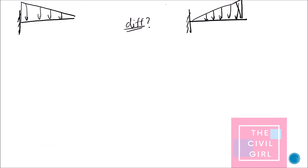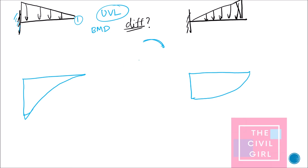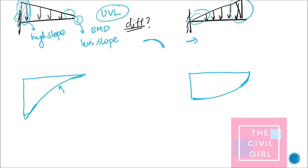From now on the difficult questions start. These two cantilever beams are both subjected to uniformly varying load — what is the difference in their bending moment diagrams? Both are parabolas, but they differ because of where the high loads are. For the first beam, higher loads are concentrated at one part giving a steeper slope there and less slope elsewhere. For the second beam, loading is very high at one end so the slope is also very high there and less at the other part.